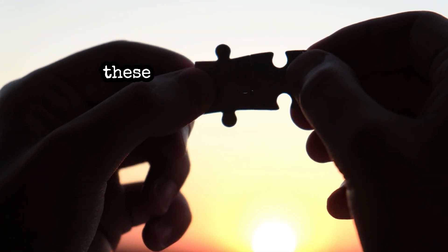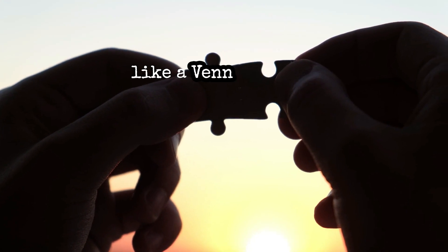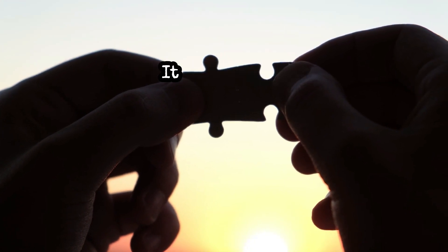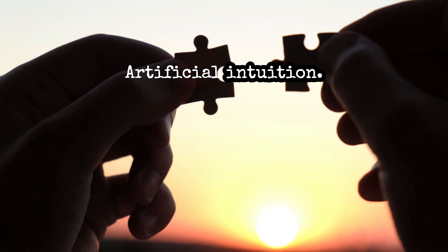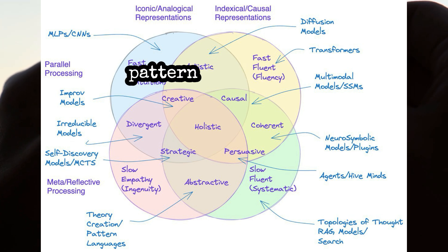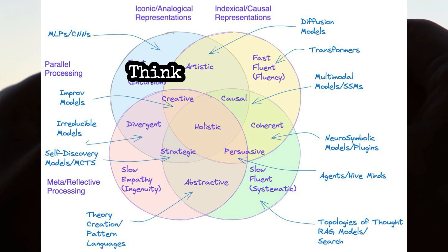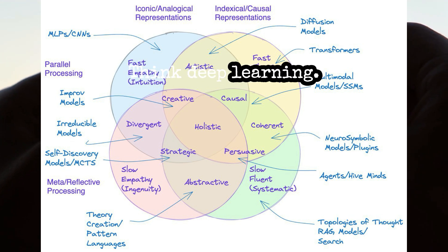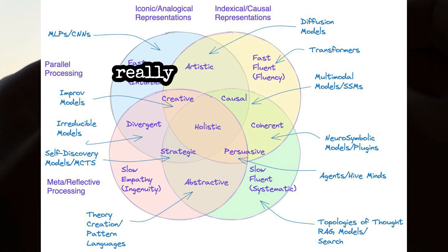He visualizes it with these overlapping circles, like a Venn diagram. It starts with artificial intuition — basically basic pattern recognition. Think deep learning. AI can spot a cat in a photo, but it doesn't really get what a cat is.